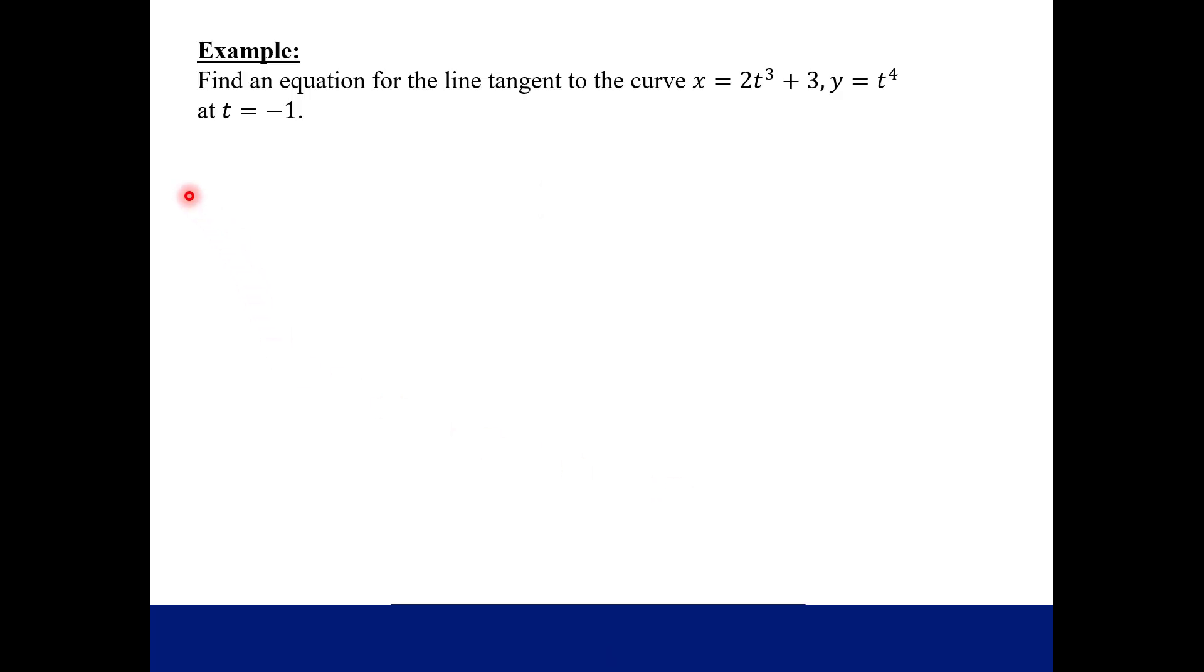So let's work out this example. We're going to find an equation for the line tangent to this curve. Notice the curve is given in parametric form at a specific t value. So first of all, recall tangent lines to curves. That's the line that approximates the slope of the curve at that point.